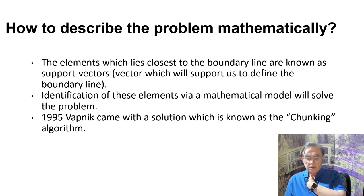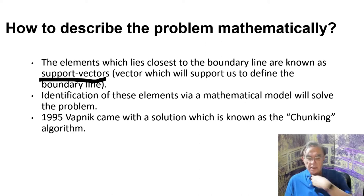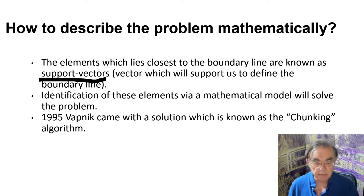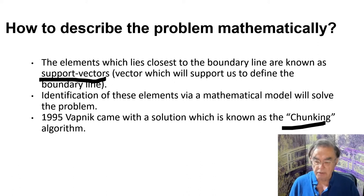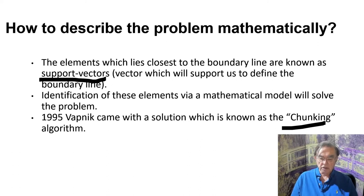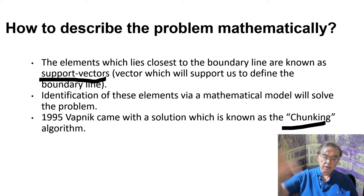The elements that lie closest to the boundary line are called the support vectors. They're the ones that help us find the line. We just need to write down some fancy mathematics — that came up with this solution in 1995, called the chunking algorithm. They're all going to be different algorithms, but they're all solving the same problem: find the line which is furthest from the support vectors.